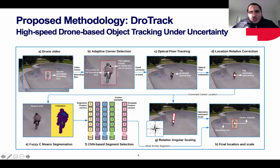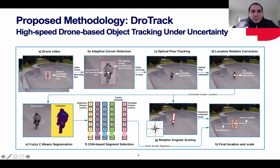To solve this uncertainty due to motion, we use fuzzy C-mean segmentation to cluster a search area around the calculated center point. We then use VGG16 to represent each cluster from the fuzzy C-mean segmentation as a feature vector. We then compare the cosine similarity between the original bounding box area and each cluster to decide which one gives the correct scale. Finally, we compare the estimations from the relative angular scaling and the fuzzy C-mean segmentation with the scene-segmented scale.